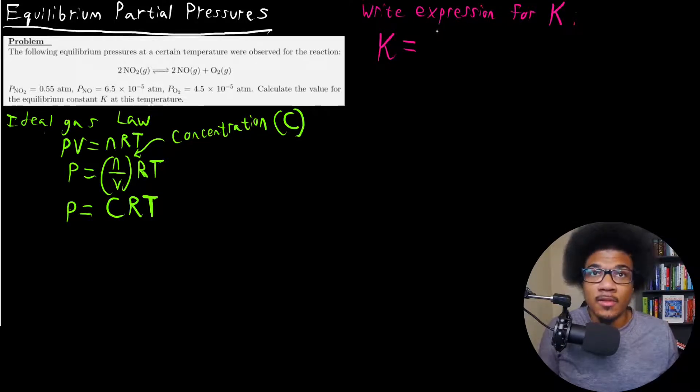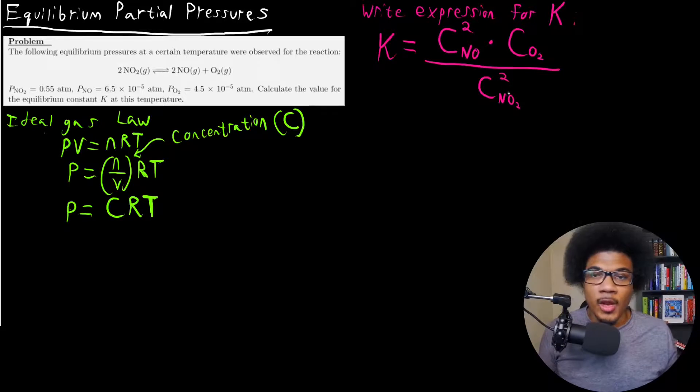So the concentration of NO squared times the concentration of O2, that's gonna be your numerator for the equilibrium constant expression. And in the denominator, you get the concentration of NO2 squared. So this is going to be your expression for the equilibrium constant.